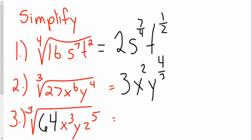And lastly, number 3, the cube root of 64 is 4. x to the 3/3 becomes x to the 1st, but we're not going to write that one. y to the 1st, the cube root of that becomes y to the 1/3. And then lastly, z to the 5/3.